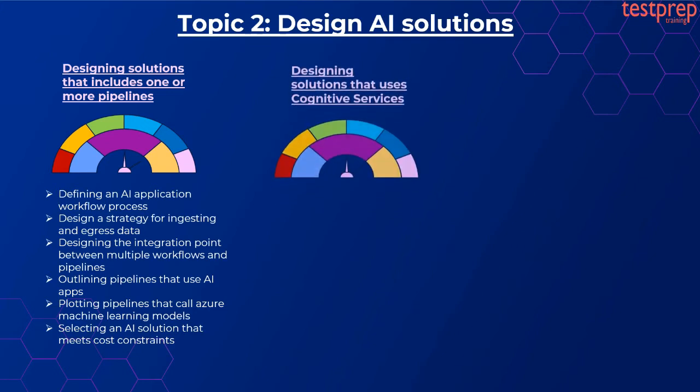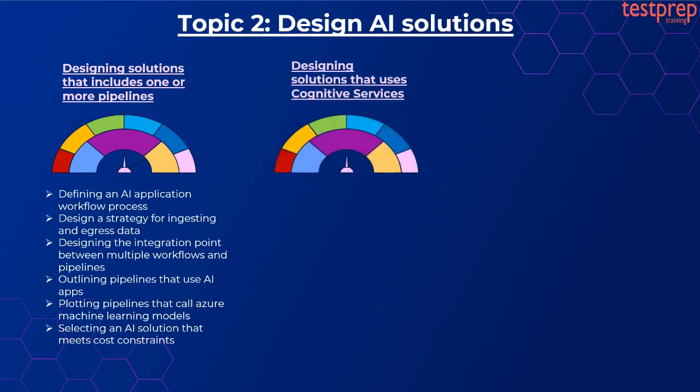Number two, designing solutions that use cognitive services. It contains one subtopic: planning solutions that use vision, speech, language, knowledge, search, and anomaly detection APIs.